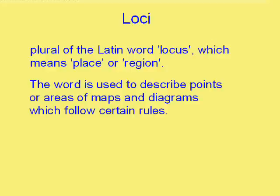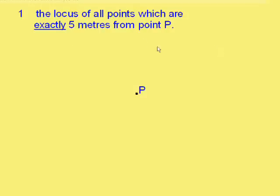Much the easiest way is to look at some examples. If we were to find the locus of all points which are exactly 5m from the point P, well there's one point here which is 5m from P, but it's certainly not all of them.